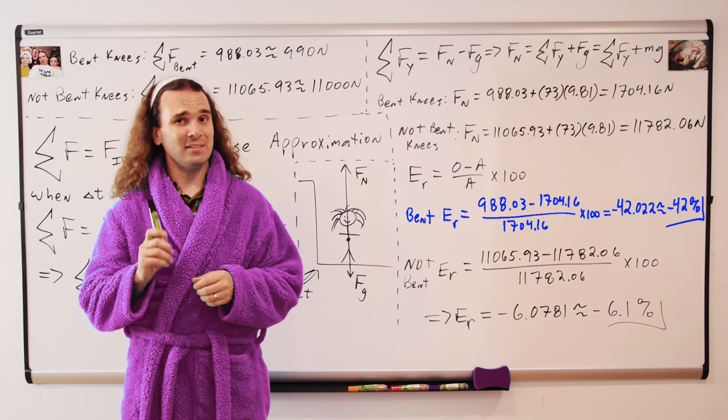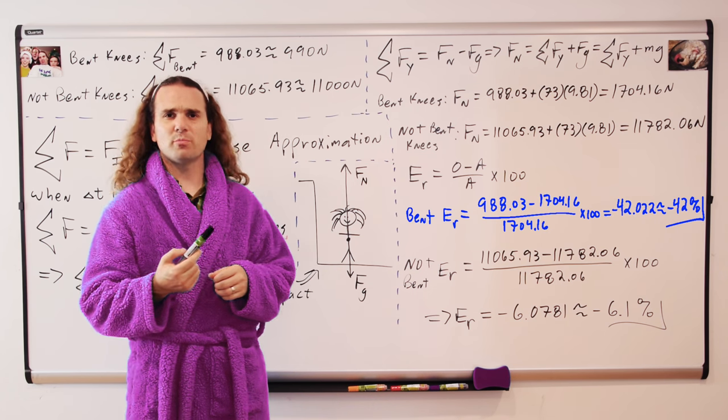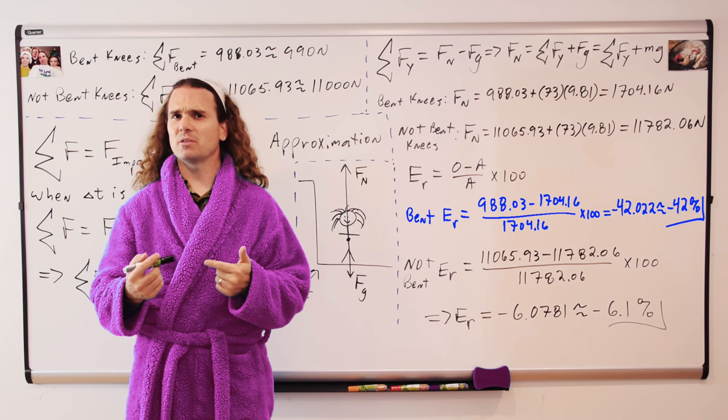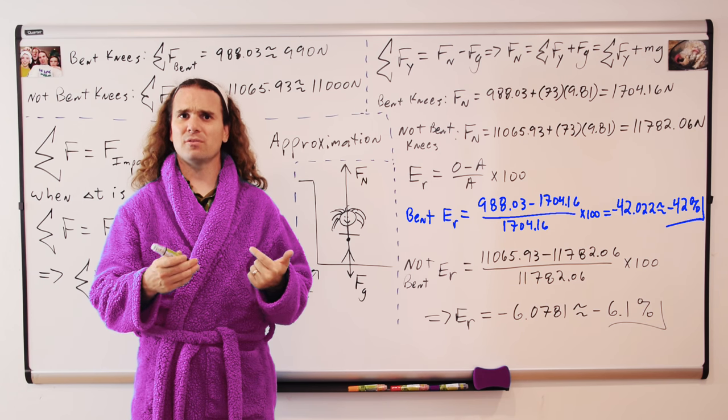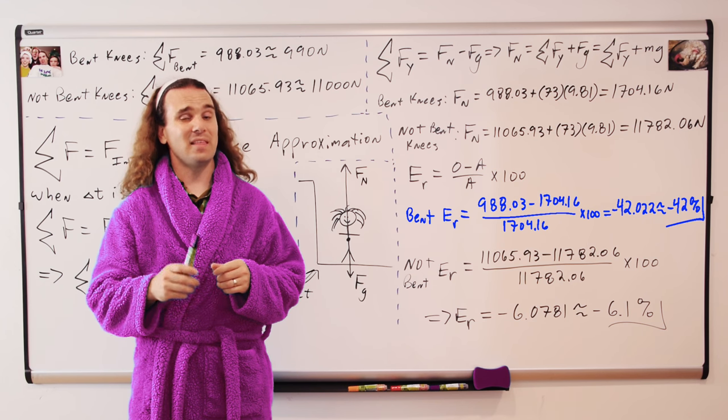In other words, for the bent knee case with a relative error of negative 42%, the impulse approximation actually produced a rather large error and we probably should not have used the impulse approximation in that instance.